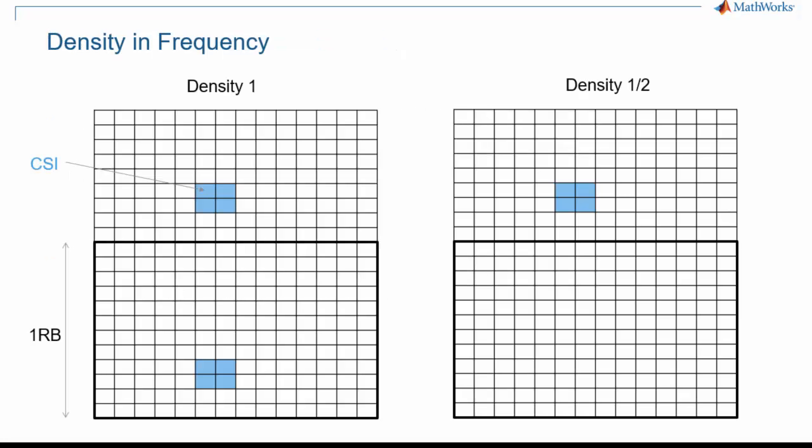Here is a concrete view of density one versus density one-half. As can be seen with density one, CSI-RS is present in every resource block, whereas CSI-RS is present in one-half of resource blocks on the right.